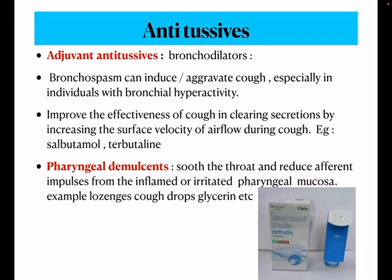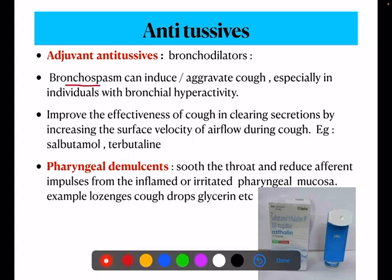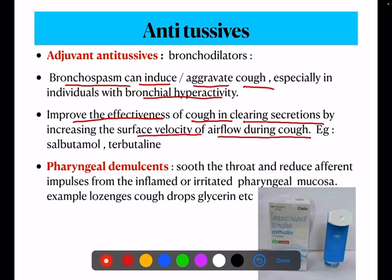Adjuvant antitussives are bronchodilators. Bronchospasm can induce or aggravate the cough, especially in individuals with bronchial hyperreactivity. When a patient has bronchial spasm, the cough is much aggravated, so we give bronchodilators. Bronchodilators improve the effectiveness of the cough in clearing secretions by increasing the surface velocity of airflow during the cough. Examples are salbutamol and terbutaline.